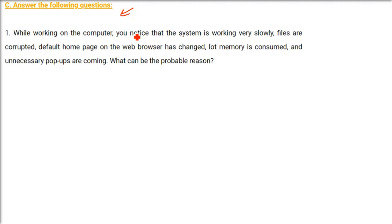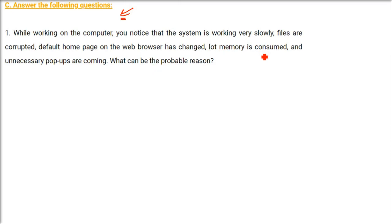We are taking some long descriptive questions to understand the concept of security and safety measures — a topic covering both computers and the internet. The first question: while working on the computer, you notice the system is working very slowly, files are corrupted, the default home page on the web browser has changed, a lot of memory is consumed, and unnecessary pop-ups are coming. What can be the probable reason?